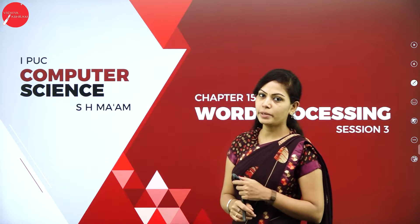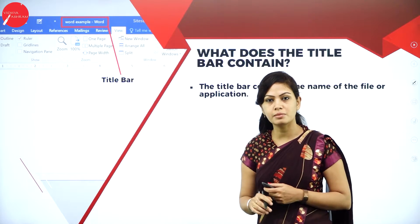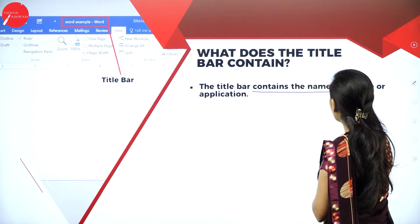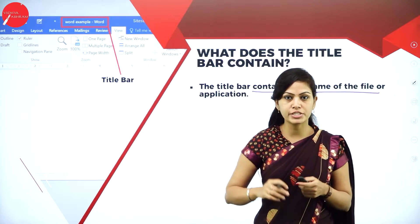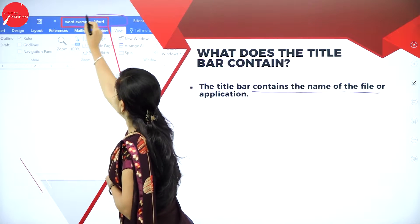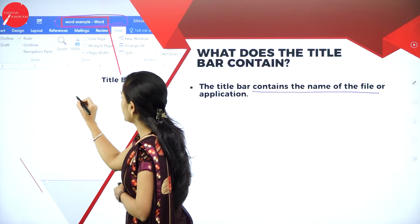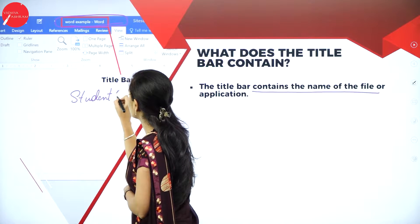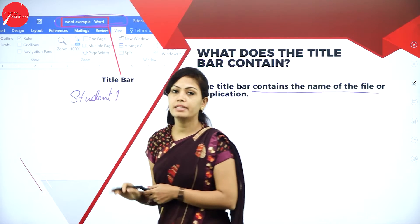So today I am continuing with the topic. Now I will explain about the title bar. What is this title bar? What does the title bar contain? The title bar contains the name of the file or application — whichever name you save your file under will appear in the title bar. For example, if you save your file as student1.docx, it will go to the title bar.